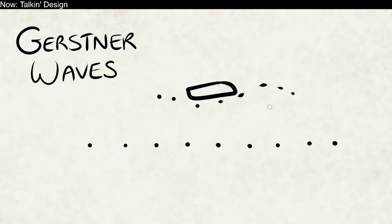Gerstner waves are a very simple concept. It's just that the particles move forward and backwards along the wave as well as up and down. That's it. They move in circles. And if you know how to get the height of the wave in the Unreal Water plugin, let me know. Bye.